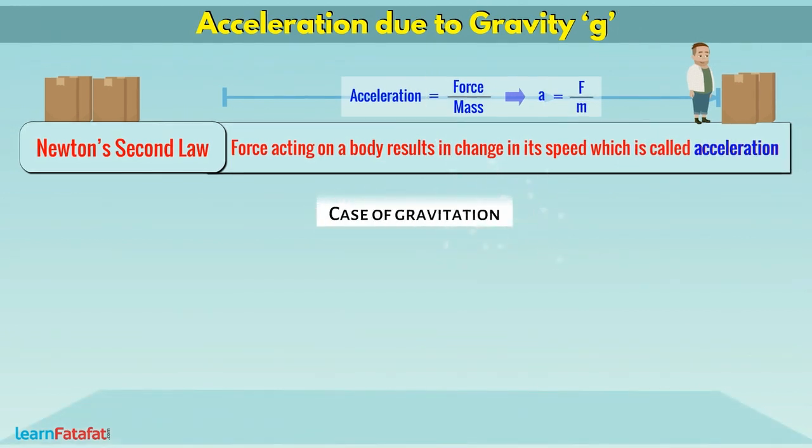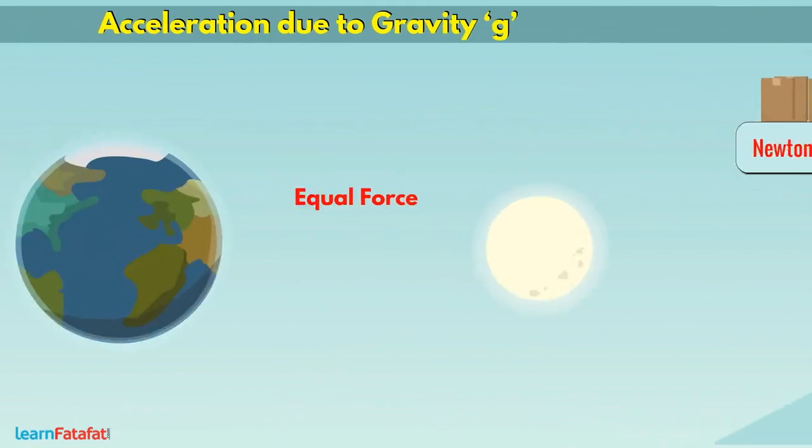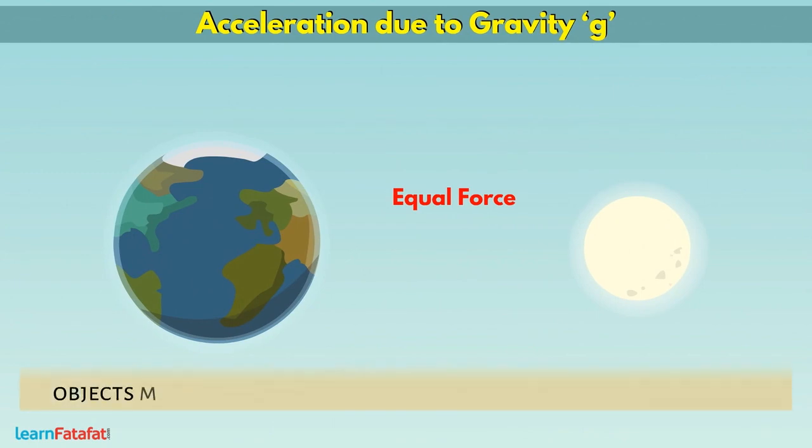In case of gravitation, the acceleration of an object with smaller mass will be greater compared to the acceleration of an object with higher mass. It is because the answer of F divided by M will be greater for smaller mass. That means the objects move towards each other with different accelerations.